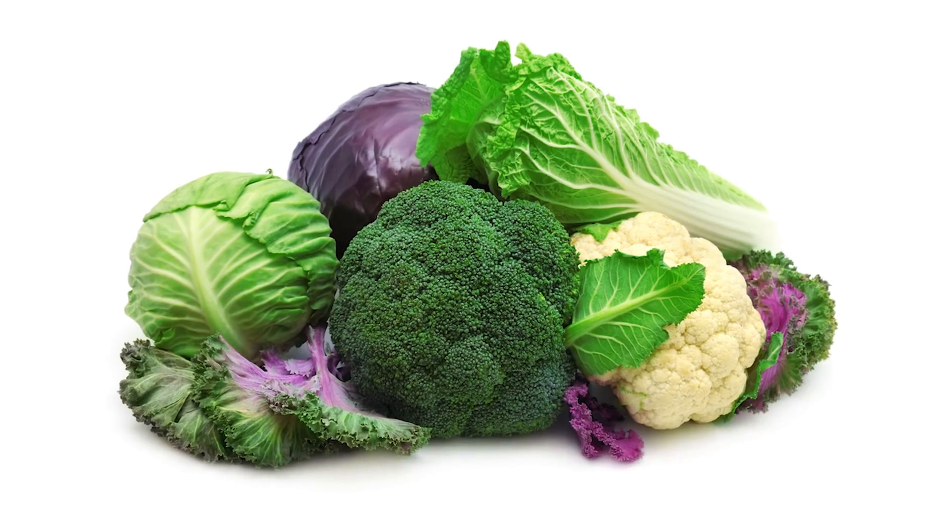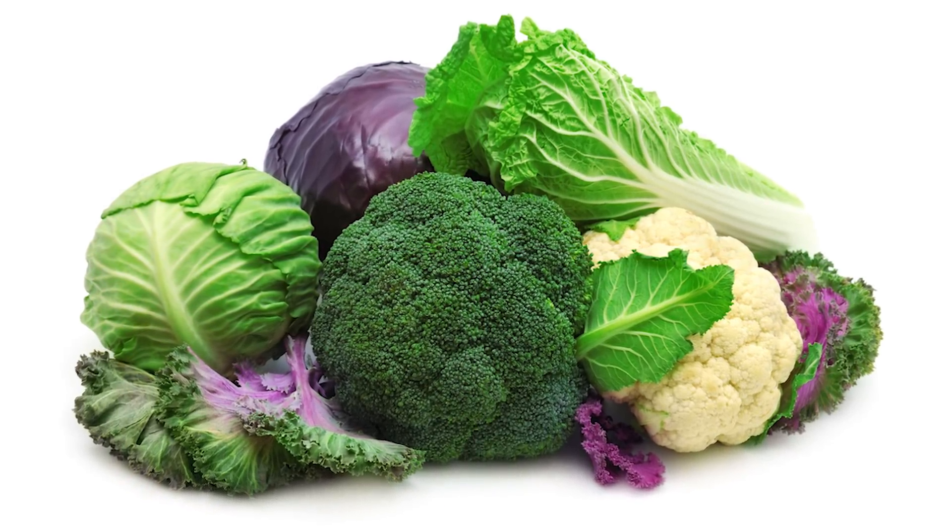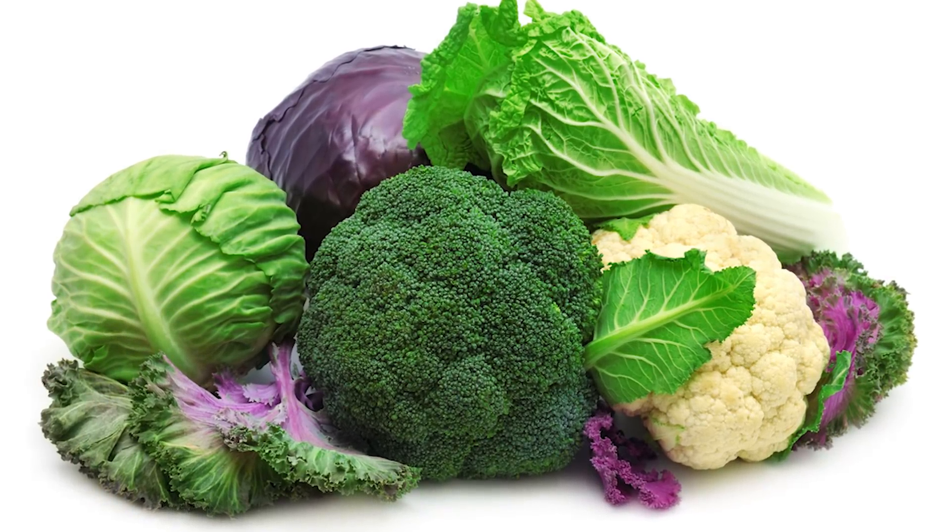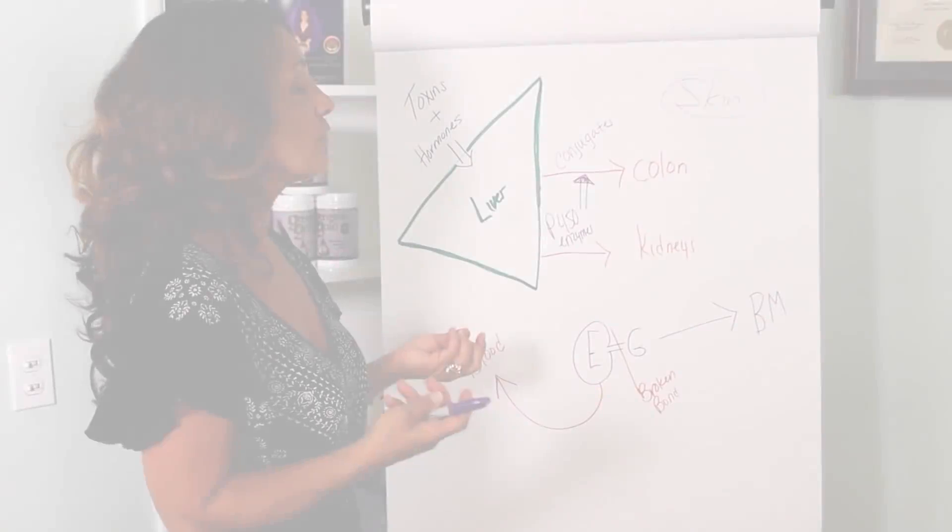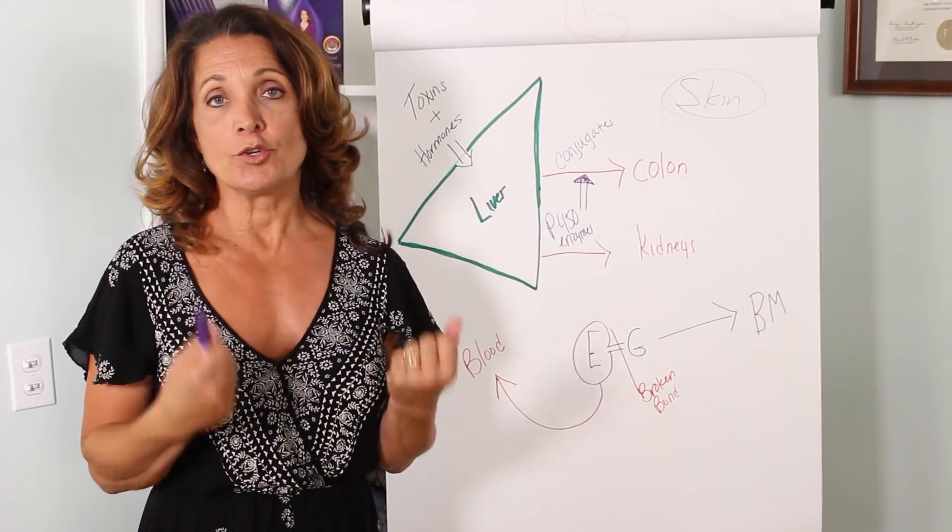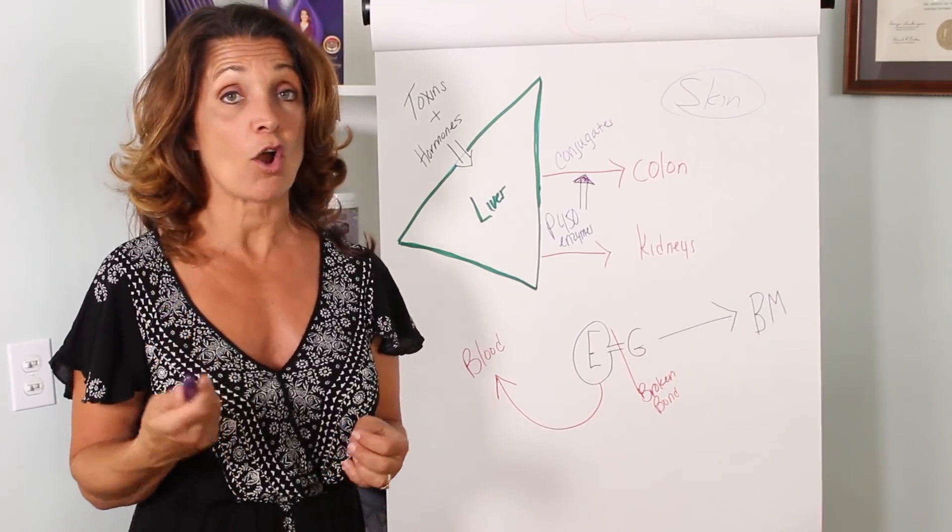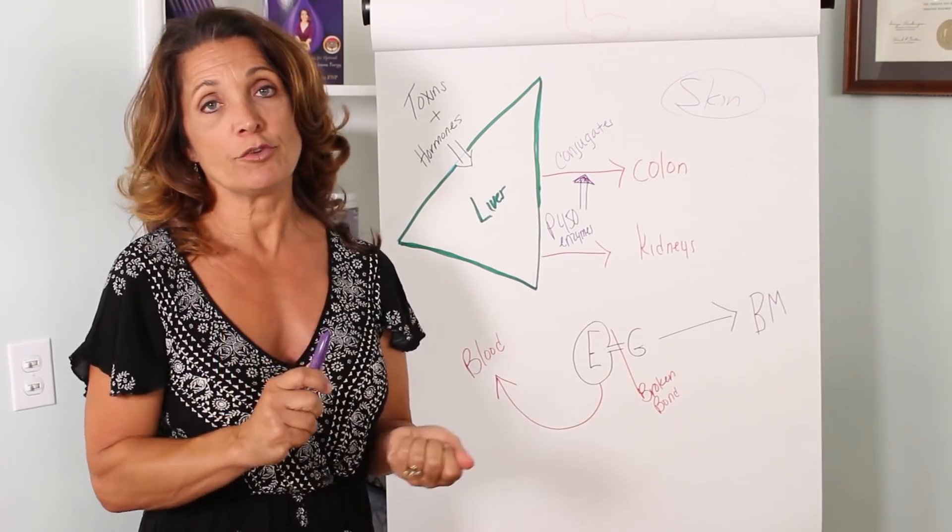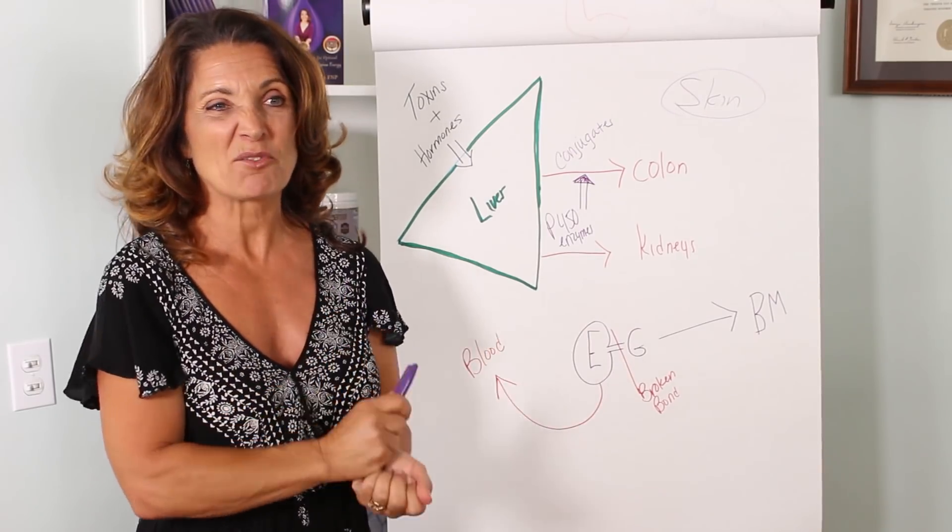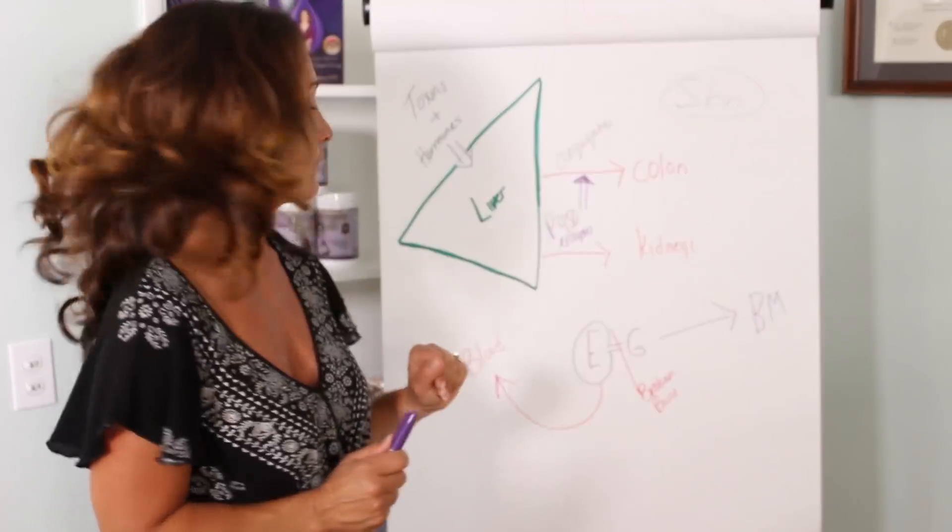And one of the foods that is really, really important are your cruciferous vegetables. Those are the stinky vegetables that produce sulfur. Those vegetables are your broccoli, your cauliflower, your brussels sprouts, your cabbage, your kale. Those vegetables provide nutrition, especially sulfur, but you can also get it from things like onions and garlic and leeks that actually helps your liver produce more conjugates so your body can get rid of your hormones and toxins when you're done with your hormones.